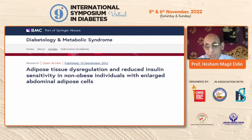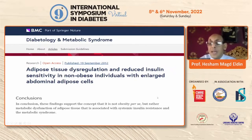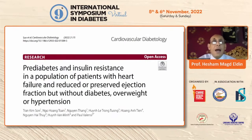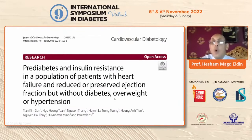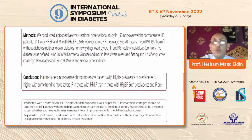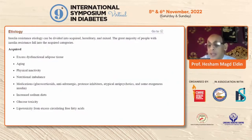It is not obesity per se — it is adipose tissue dysregulation. A study published in 2012 showed it's not obesity but rather adipose tissue dysfunction, examining cell hypertrophy and ectopic deposition of adipose tissue in the viscera, muscles, and liver. A 2022 study examined insulin resistance in populations with heart failure but without diabetes, overweight, or hypertension, finding that insulin resistance was higher in non-diabetic, non-overweight, normotensive patients with heart failure — demonstrating a direct link between insulin resistance and heart failure.